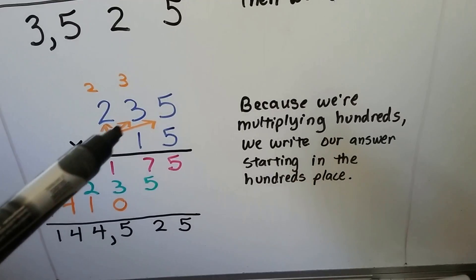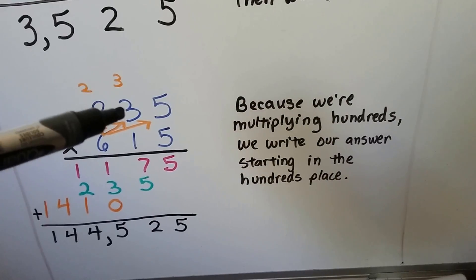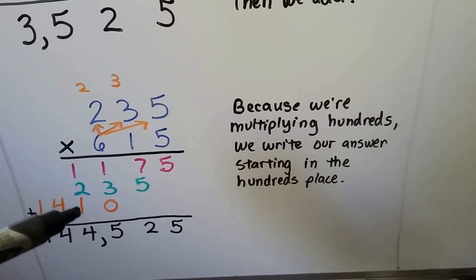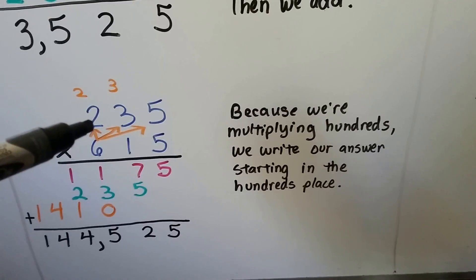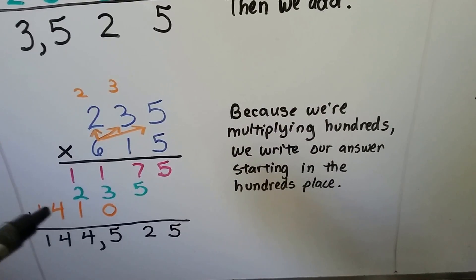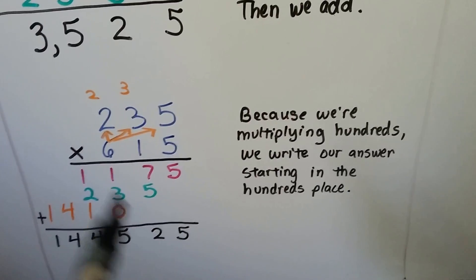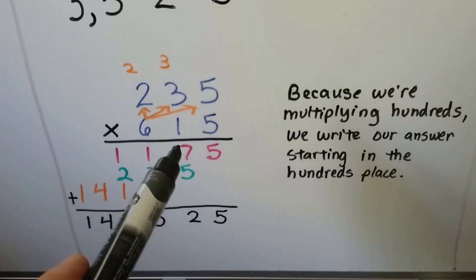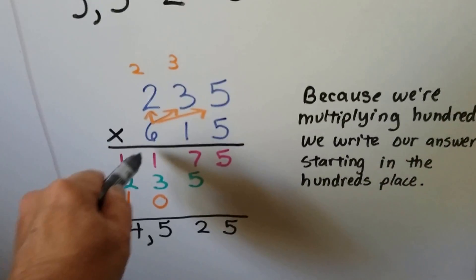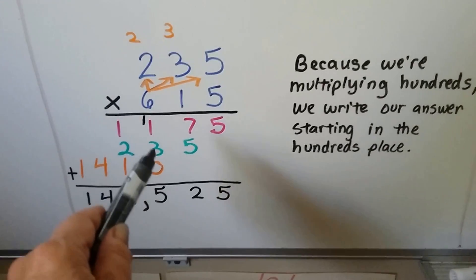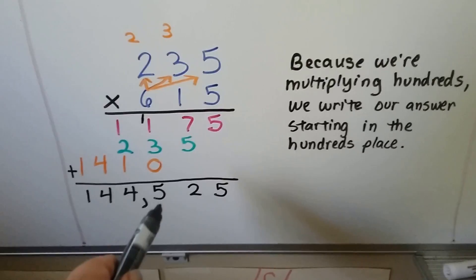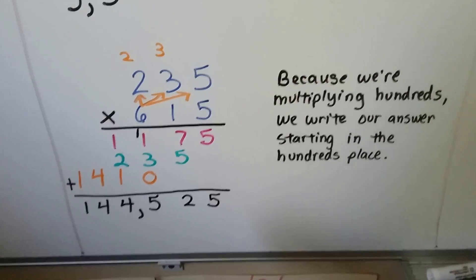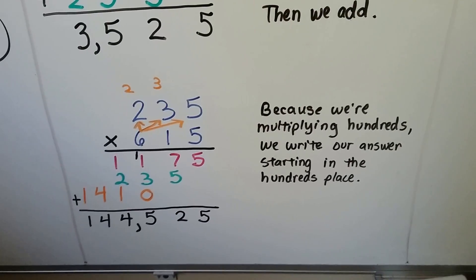Six times three is 18, plus that three is 21 — the two goes up and the one goes down. Then six times two is 12, plus one more is 14 — we put the 14 here. We draw our line, put our plus sign, and add all the columns. Five and nothing is five, seven and five is 12 — regroup the one, put the two down. Three, four, five plus zero is five. Then one plus two plus one is four, and we drop the leading digits down. We put in our comma — we have 144,525.